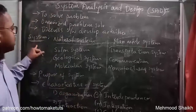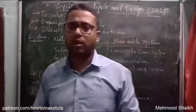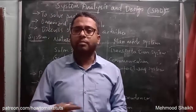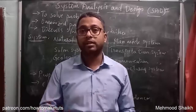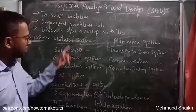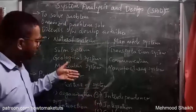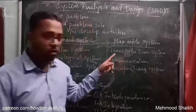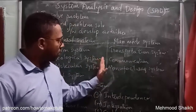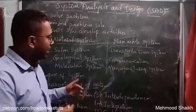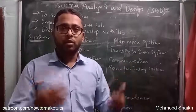Now let us first try to understand what is the meaning of 'system.' The very first word in this subject is system. Whenever you think about a system, a system can be anything — there are many systems present in this world. A system can be a natural system or there can be man-made systems. Examples of natural systems include a solar system, a geological system, and a molecular system. Examples of man-made systems include transportation system, communication system, and manufacturing system. From these examples, we understand that a system is formed when more than one subsystem, or a combination of people and computers, work together to achieve a common task.